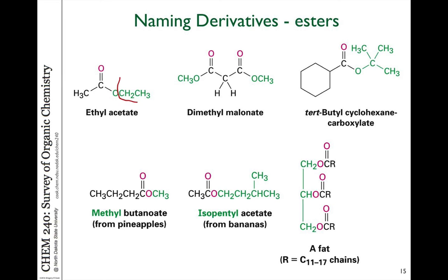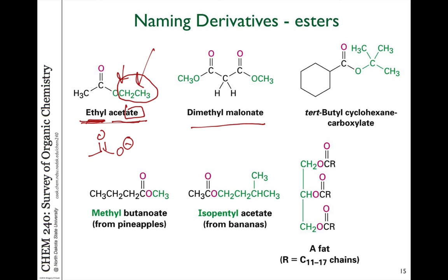Esters are named using the group attached to the oxygen as a prefix and the name of the acid as an anion — the ATE suffix refers to the anionic form of the acid. So an acetate ion with an ethyl group attached gives ethyl acetate, or ethyl ethanoate in IUPAC naming. From malonic acid we get dimethyl malonate, and other examples include tert-butyl cyclohexane carboxylate, methyl butanoate, and isopentyl acetate.